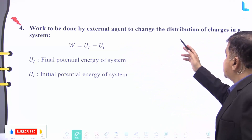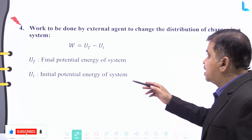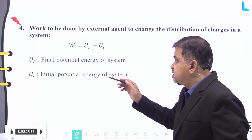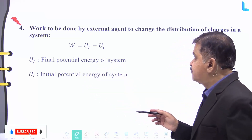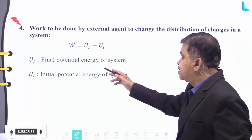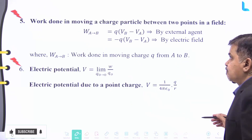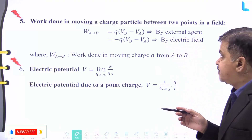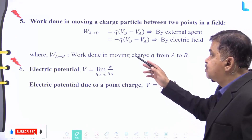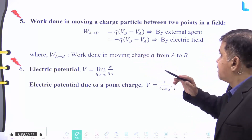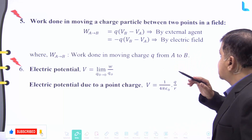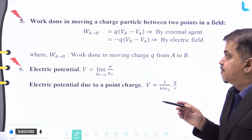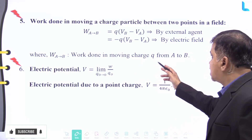Number four: the work to be done by an external agent to change the distribution of charges in a system is given by W = Uf − Ui, where Uf is the final potential energy and Ui is the initial potential energy of the system. Number five: the work done in moving a charge between two points A and B in a field is W(A→B) = q(VB − VA) for an external agent, and equals −q(VB − VA) for the electric field, where q is the charge moved from A to B.